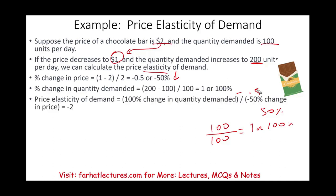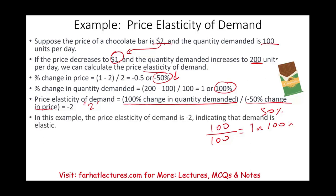Now we compute the price elasticity: 100% change in quantity demanded divided by 50% change in price equals 2 (taking the absolute value). So in this example, the answer is 2, indicating that the demand is elastic. A 50% decrease in price led to a 100% increase in quantity demanded — meaning consumers are highly responsive to price changes for this product.